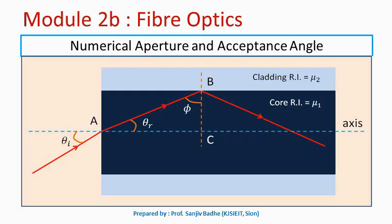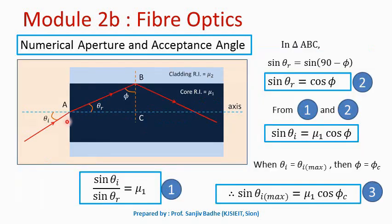Let us define acceptance angle and numerical aperture. Consider a light ray entering into the optical fiber at an angle theta_i with the axis of the fiber. The medium is changing — the light ray initially travels in air and enters into the core, so refraction will occur. theta_r will be the angle of refraction. The light ray continues and arrives at the core-cladding boundary, where phi is the angle of incidence. If phi is greater than the critical angle of incidence, then internal reflection will occur. The refractive index of the core is mu_1 and the refractive index of the cladding is mu_2, and for internal reflection to occur, mu_1 must be greater than mu_2.